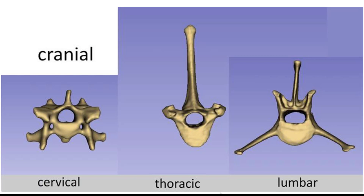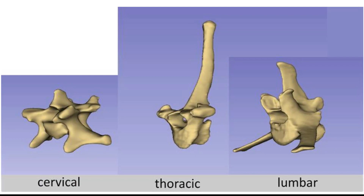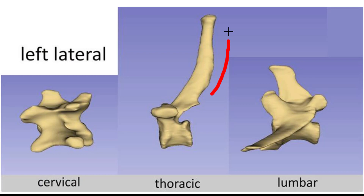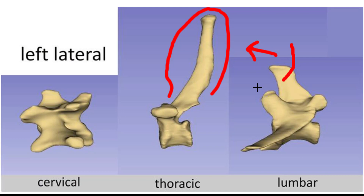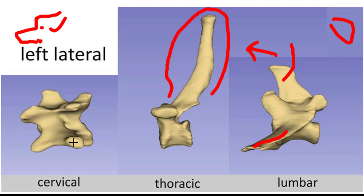Now we can make general comparisons between vertebrae in a lateral view. The spinous process in the thoracic vertebrae is quite extensive, especially in the cranial thoracic region. In the lumbar vertebrae, the spinous process has a cranial orientation — the animal's head is this way in these left lateral views. The transverse processes of the lumbar also have a cranial-ventral orientation. The cervical spinous process is most reduced, with sled-like enlarged transverse processes. The thoracic transverse processes are reduced and have fovea for articulation with the head of the rib.